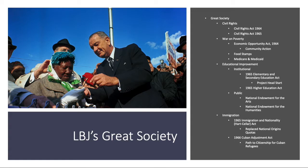The National Endowment for the Arts and the National Endowment for the Humanities provided funding for public arts, performances, entertainment, and literature — both programs still exist today. On immigration, the 1965 Immigration and Nationality Act, sometimes known as the Hart-Celler Act, changed a 40-year law that had put restrictions on immigration based on national origins, which many saw as racist. The law replaced national origin quotas. Also in 1966, the Cuban Adjustment Act provided a clear path to citizenship for Cubans who had come to the United States as refugees.